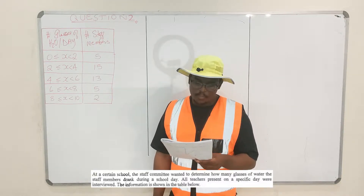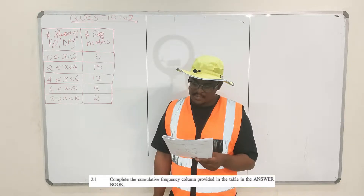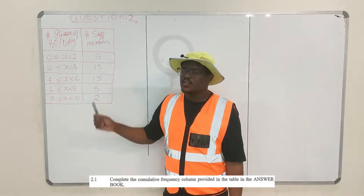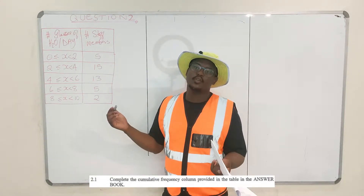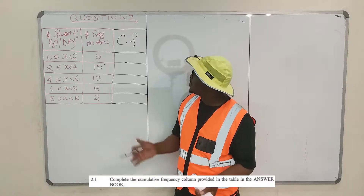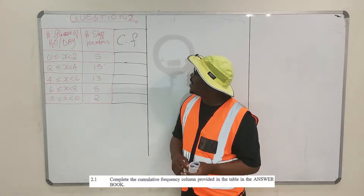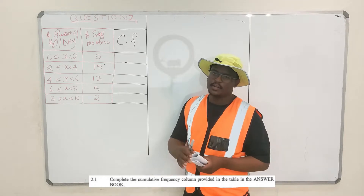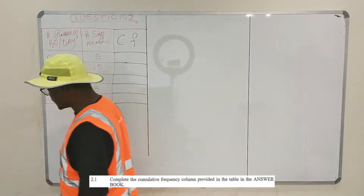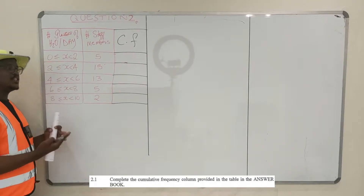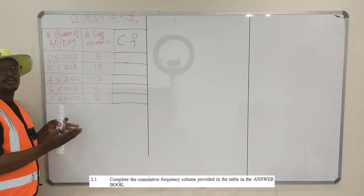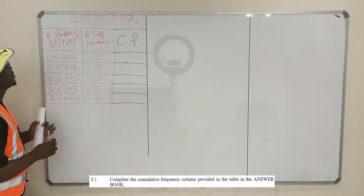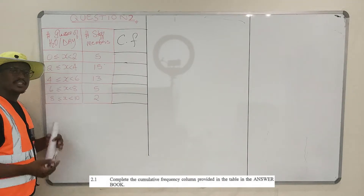Now let's go to 2.1: complete the cumulative frequency column provided in the table. They want us to complete the cumulative frequency column. The cumulative frequency is also known as a running total — you want to know the total at a specific point in time or at a specific position.